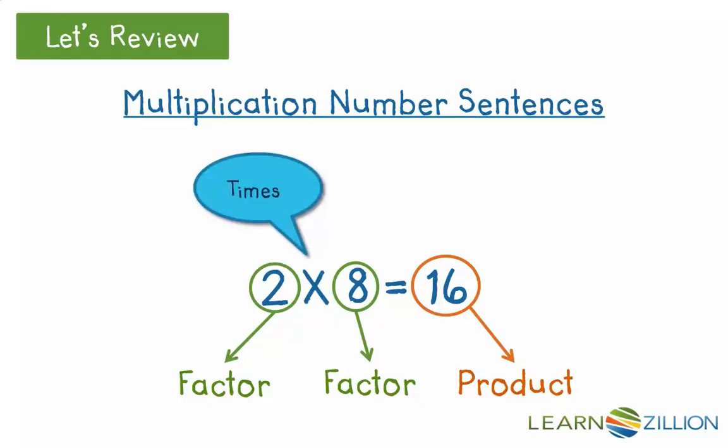The x symbol says times, but it's helpful if we think of it as groups of, like 2 groups of 8 equals 16.